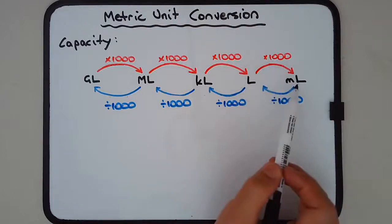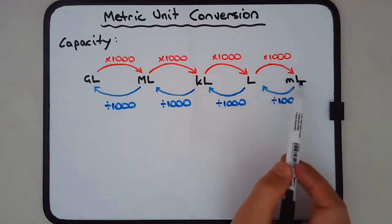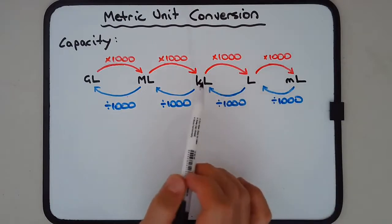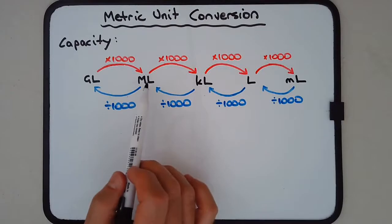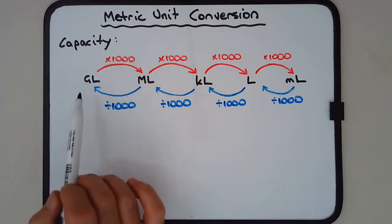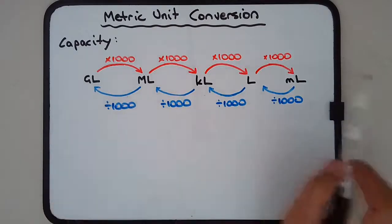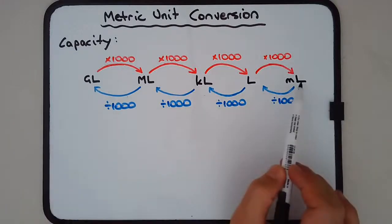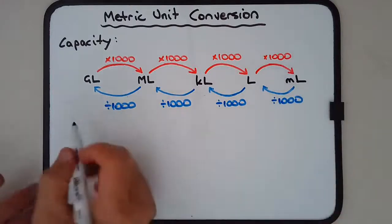That's because there's a thousand milliliters in a liter, a thousand liters in a kiloliter, a thousand kiloliters in a megaliter, and a thousand megaliters in a gigaliter. Red arrows multiply by a thousand, blue arrows divide by a thousand when going from small units to larger units. Let's look at an example.